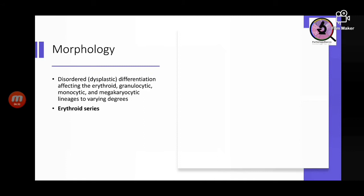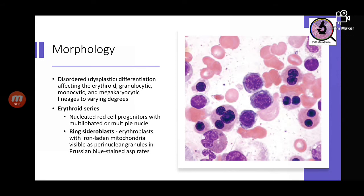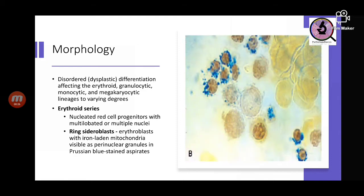Morphologically in MDS there is dysplasia — maturation is hindered — which may affect the erythroid, granulocytic, monocytic, or megakaryocytic cell lines to varying degrees. In the erythroid series, nucleated red cell progenitors (erythroblasts) show multilobated or multiple nuclei. Ringed sideroblasts are erythroblasts with iron-laden mitochondria; on Prussian blue stain they appear as perinuclear granules.